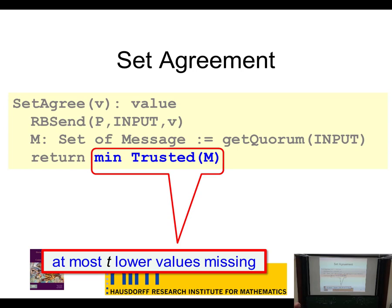Once I can do this, set agreement is actually easy: set agreement asks for a set of trusted values, and I pick the smallest one. It's not too hard to see that if we all run this protocol, we might end up with different sets of values due to asynchrony, but the number of lower values that are valid and missing can be at most t. So if we pick the lowest value, we're guaranteed to pick no more than t+1 distinct values. This is a very simple t-set agreement protocol, and it corresponds to processes starting on a big fat simplex and dropping down to the t-skeleton — the first step of our generic protocol.